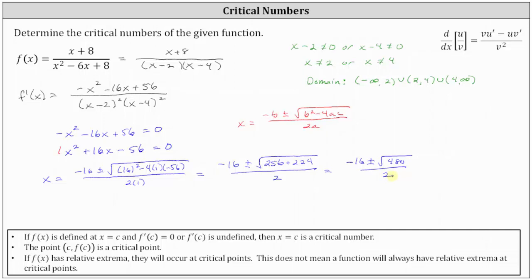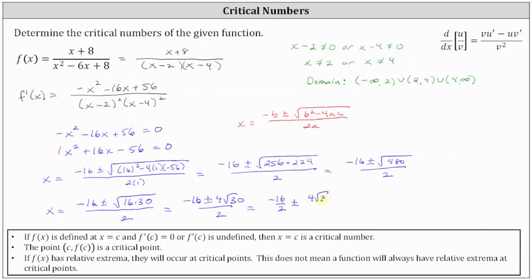Now we simplify the square root of 480. Since 16 is a perfect square factor of 480 — because 480 equals 16 times 30 — the square root of 16 is 4, so the square root of 480 simplifies to 4 square root of 30. This gives us negative 16 plus or minus 4 square root of 30, all divided by 2, which equals negative 8 plus or minus 2 square root of 30.